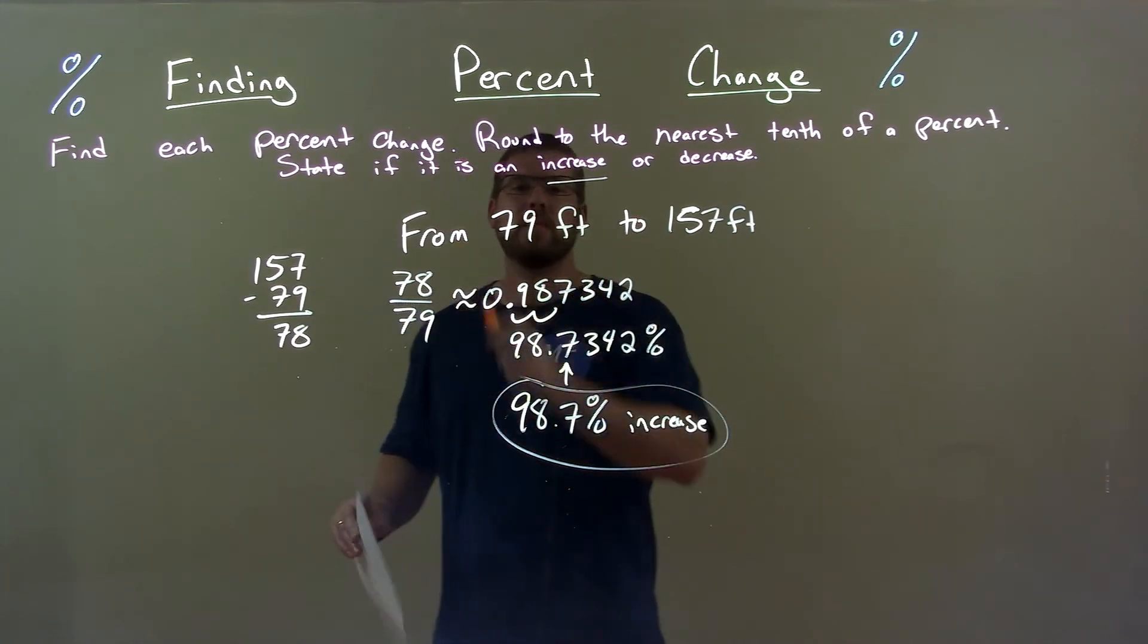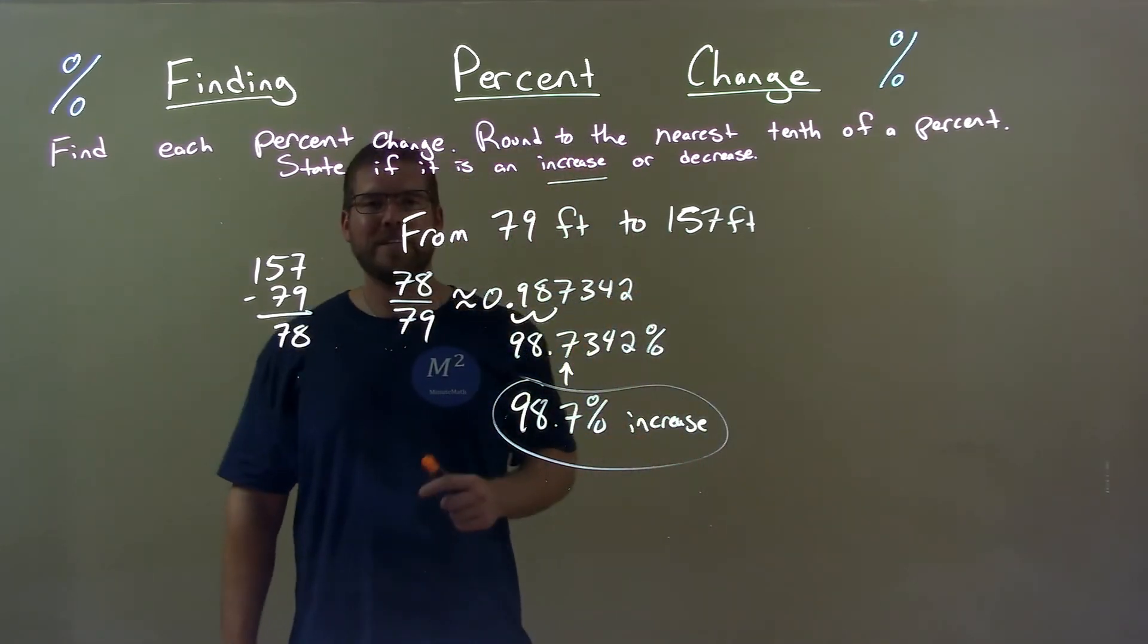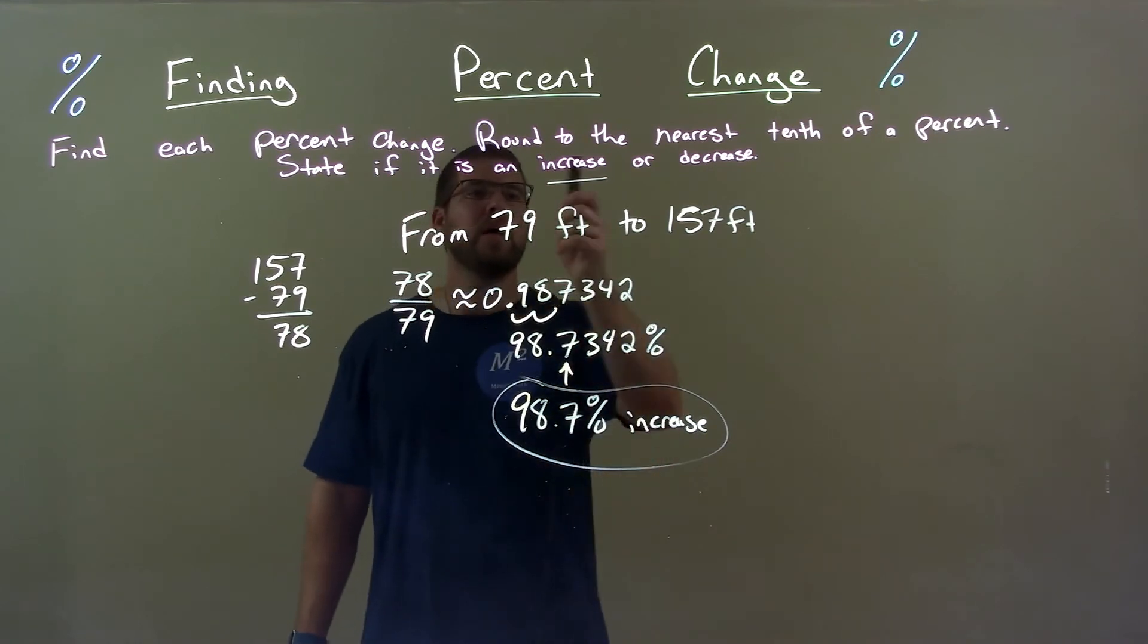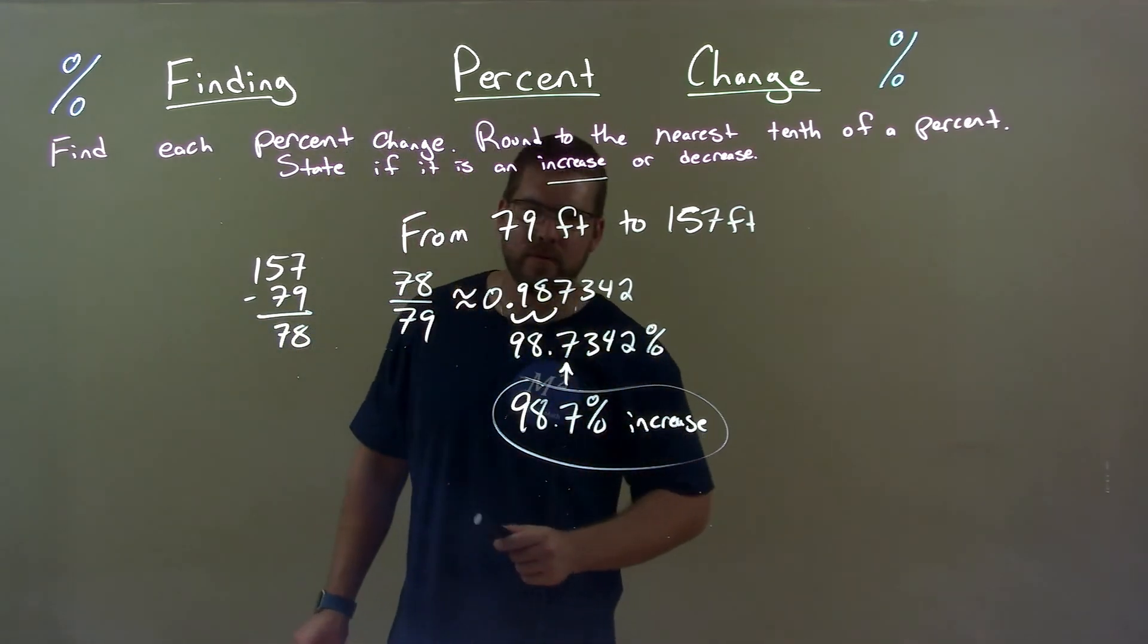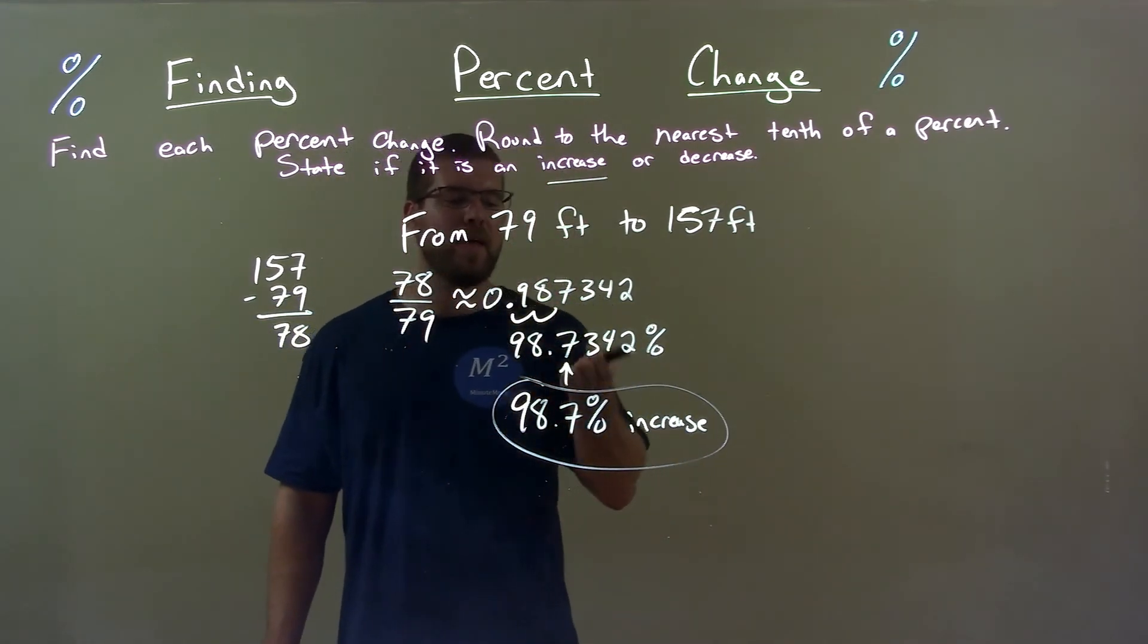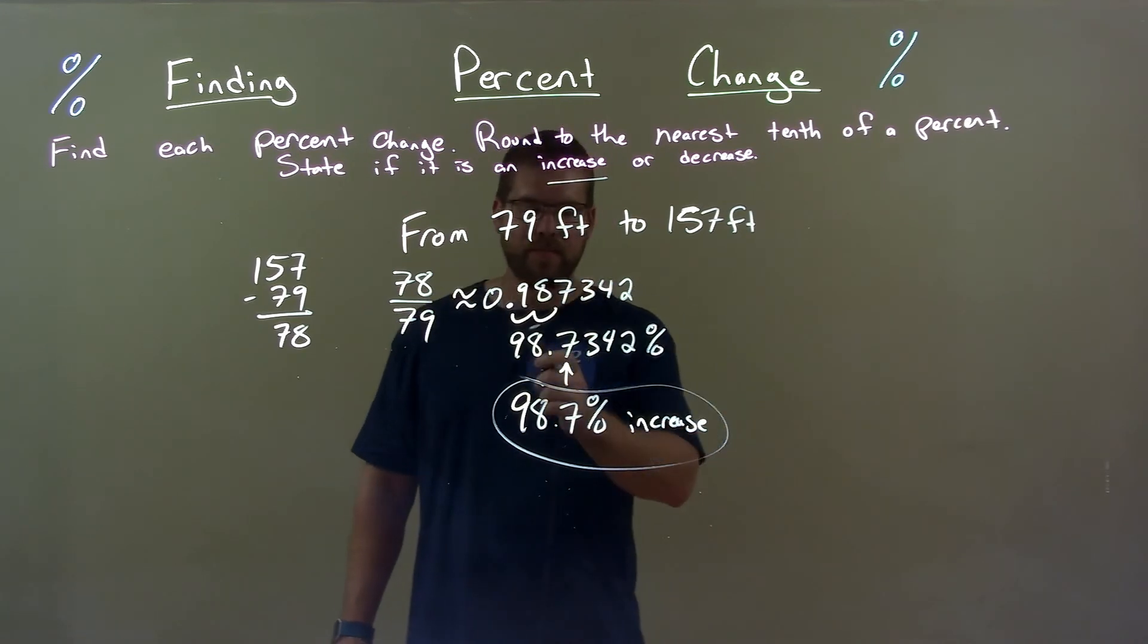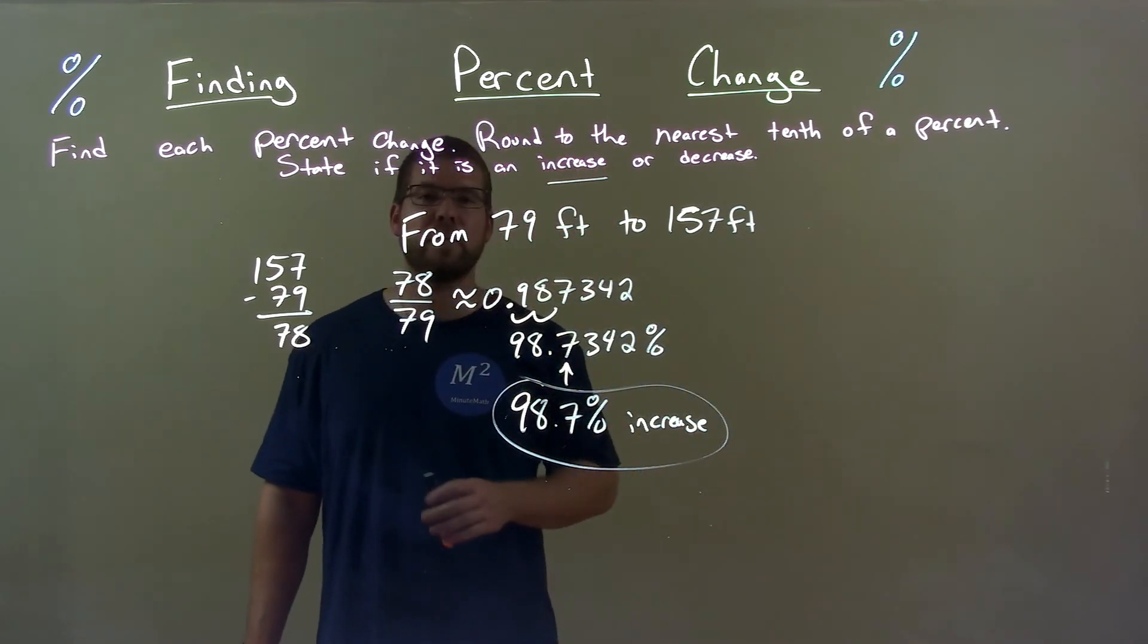Quick recap: we're given from 79 feet to 157 feet. Well, that's an increase right there. So, then we'd find the difference between the two, take that number, divide it by the first one, got a decimal. Wrote that decimal as a percent, then rounded it and got our final answer: 98.7 percent increase.